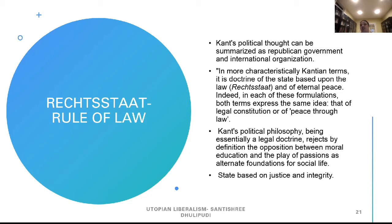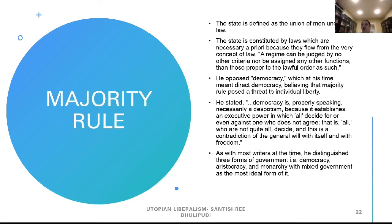The state must be based on justice and integrity. On majority rule: the state is defined as a union of men under law, constituted of laws which are necessary a priori because they flow from the concept of law. Kant opposed democracy — which at his time meant direct democracy — believing that majority rule posed a threat to individual liberty. He stated: 'Democracy is properly speaking necessarily a despotism because it establishes an executive power in which all decide for or even against one who does not agree.'